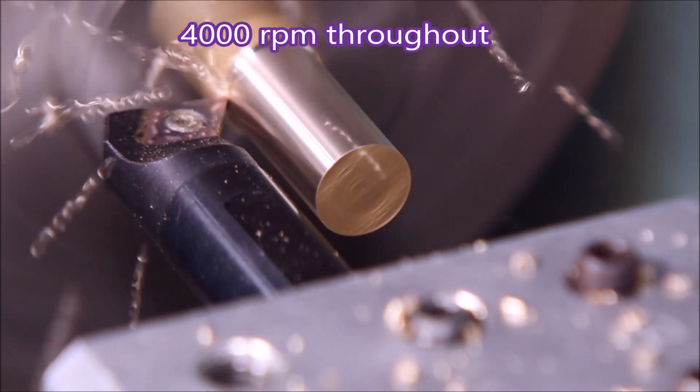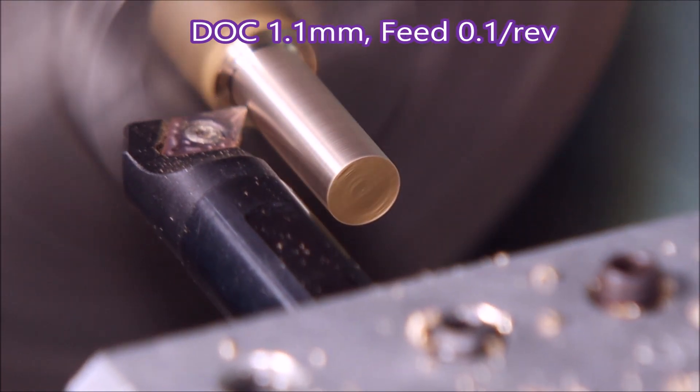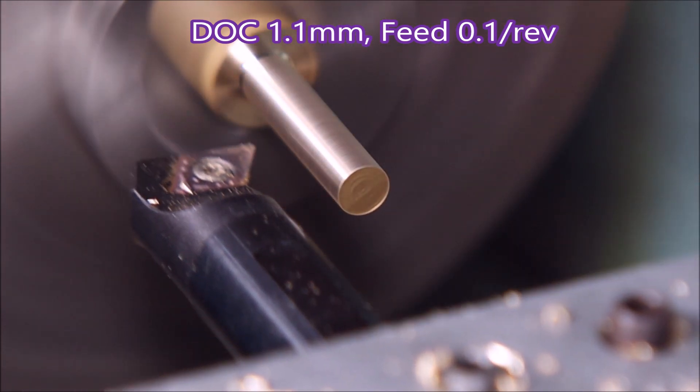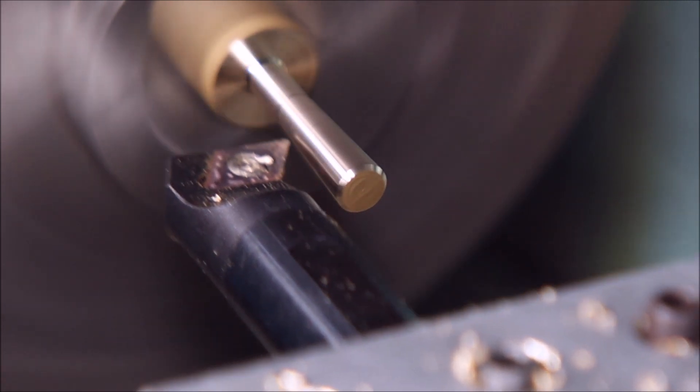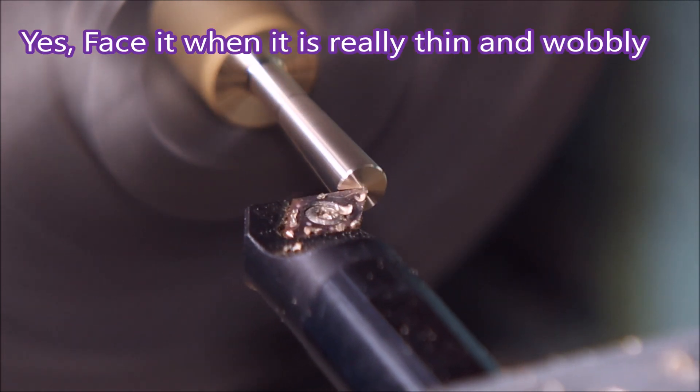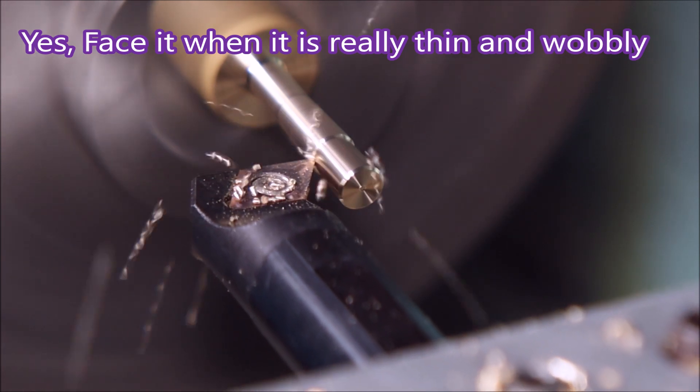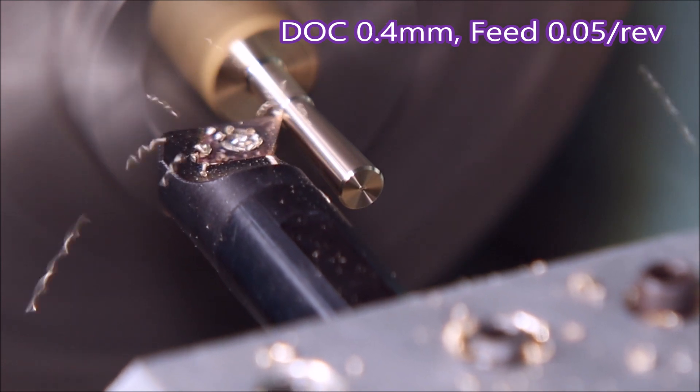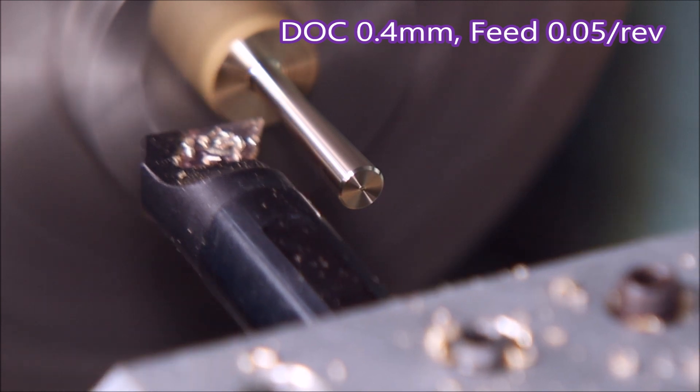We'll be doing 4,000 RPM throughout this video. This program that I wrote here is particularly bad. I wait until the thing has got really thin and spindly before I face it off, which is a bit daft. Look at that, wants to jump all over the place. Normally I face first and then start doing any roughing down. This gives us a nice smooth face for the tool to run into when it starts its cut.